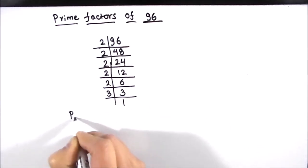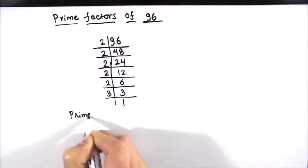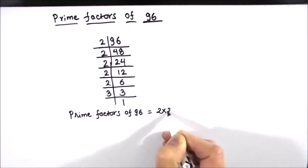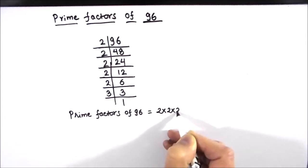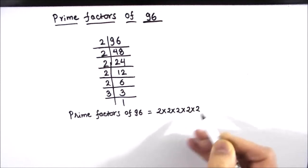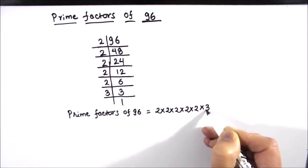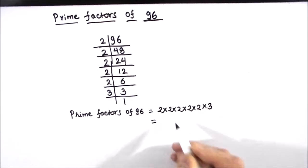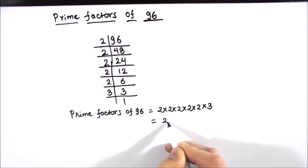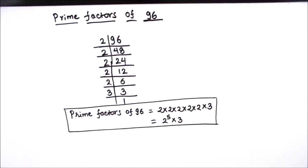So the prime factors of number 96 are 2 times 2 times 2 times 2 times 2 times 3, or in exponential form we can write it as 2 raised to the power 5 times 3. So these are all the prime factors of 96.